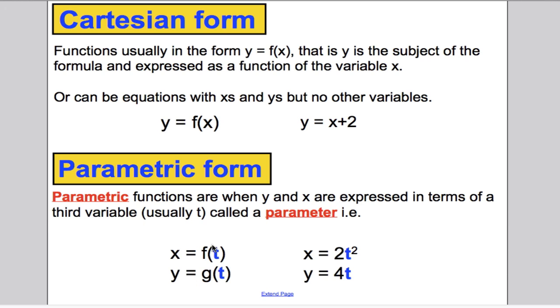An example of x would be some function of t, like x equals f(t), y would be some different function of t, and here's an example we dealt with in the previous video: x is 2t squared and y is 4t. So that's Cartesian and parametric form.